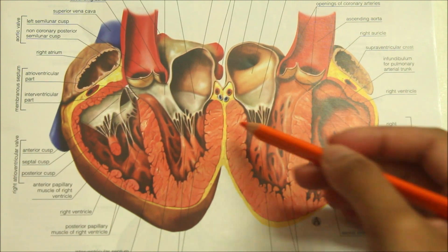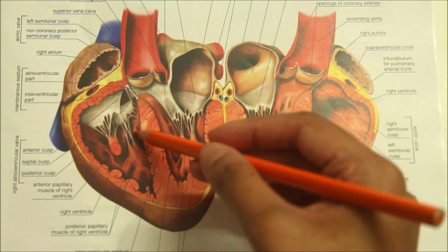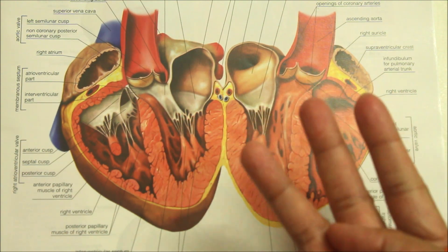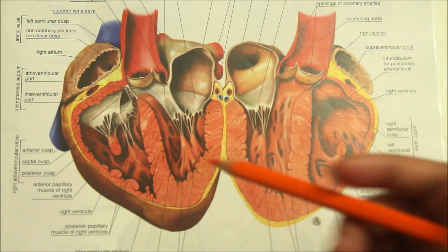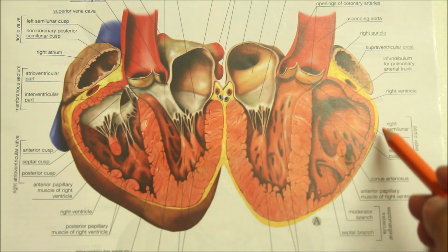The walls of the left ventricle are three times thicker than those of the right ventricle.